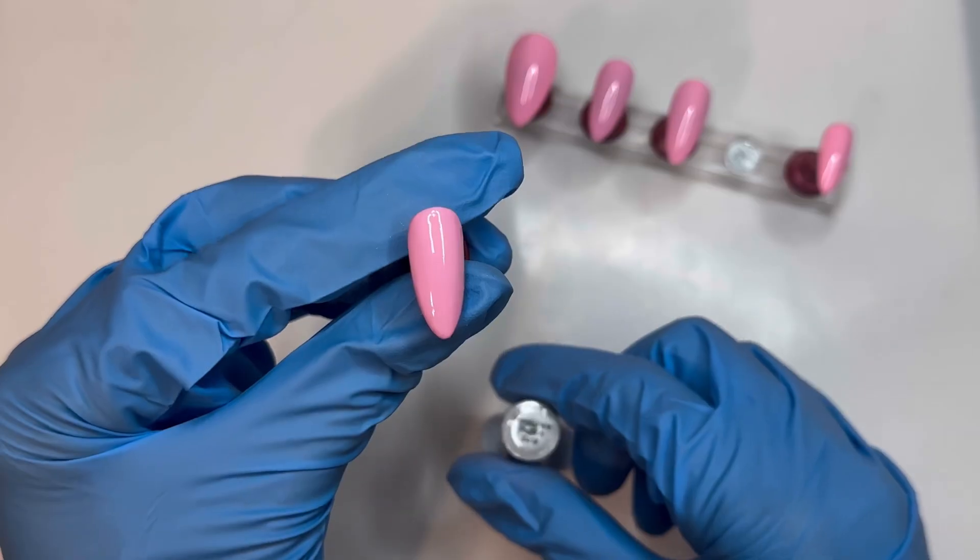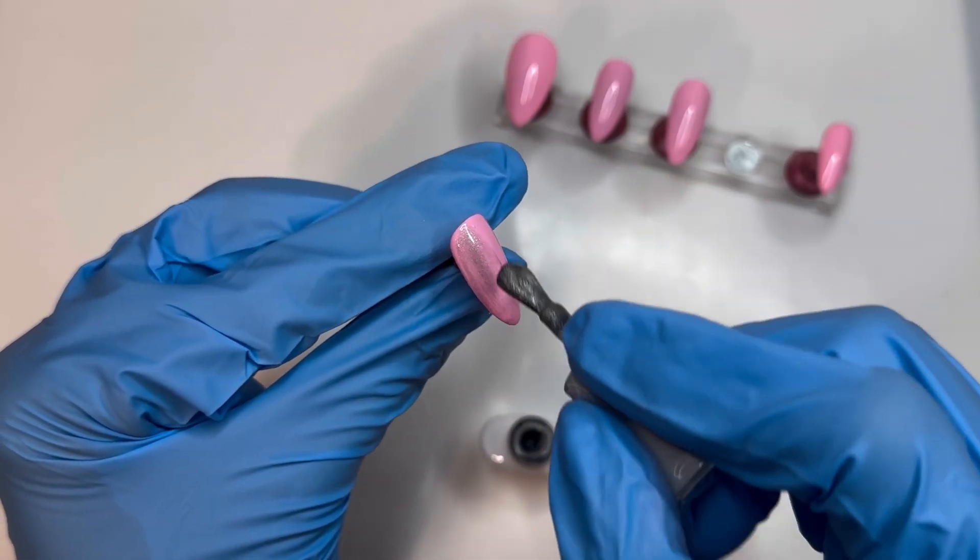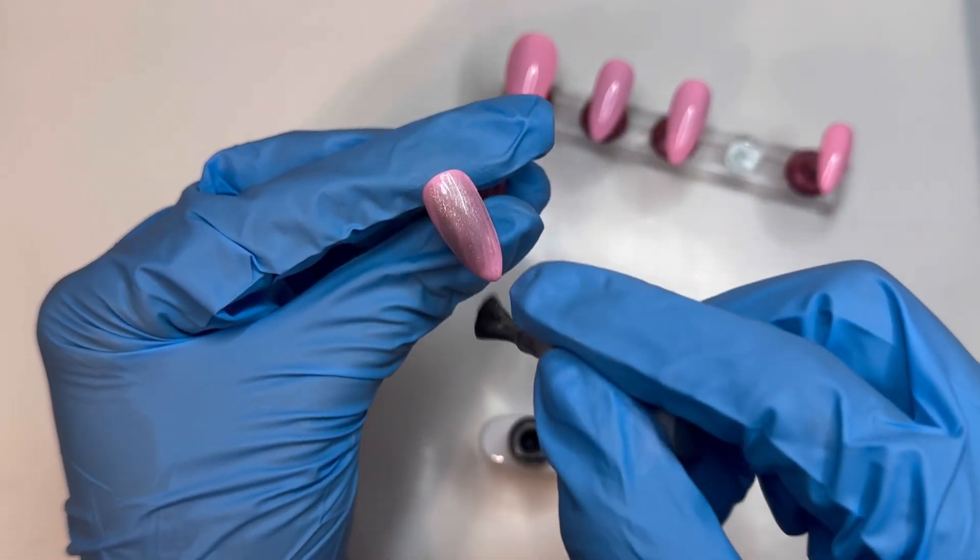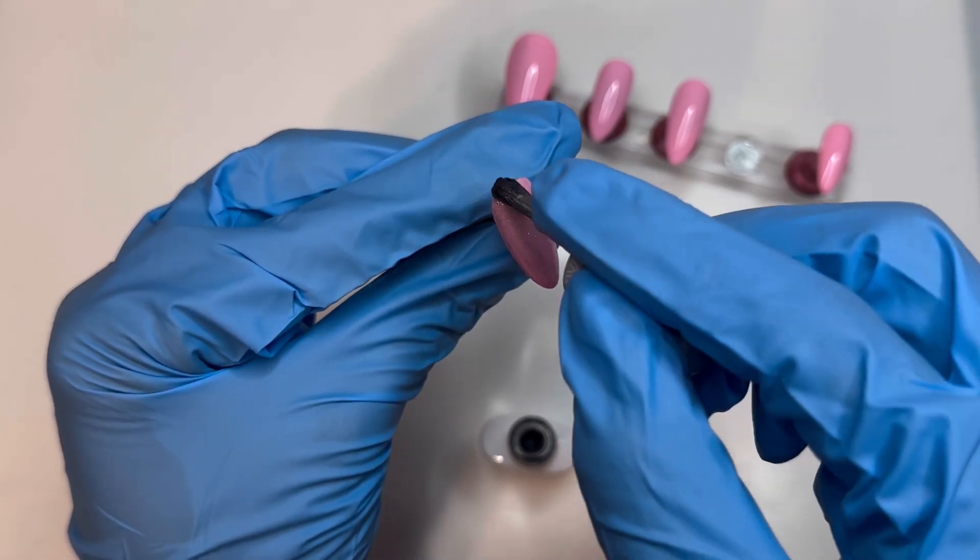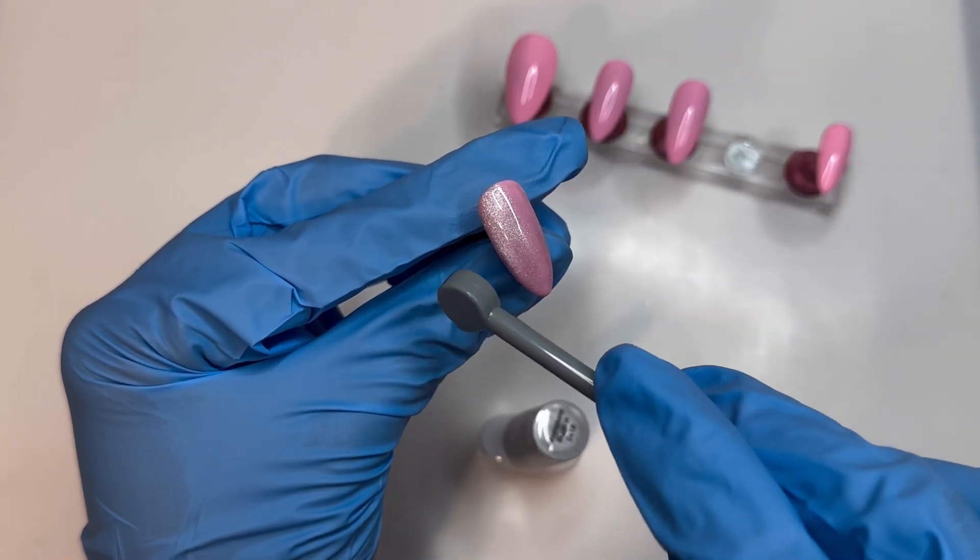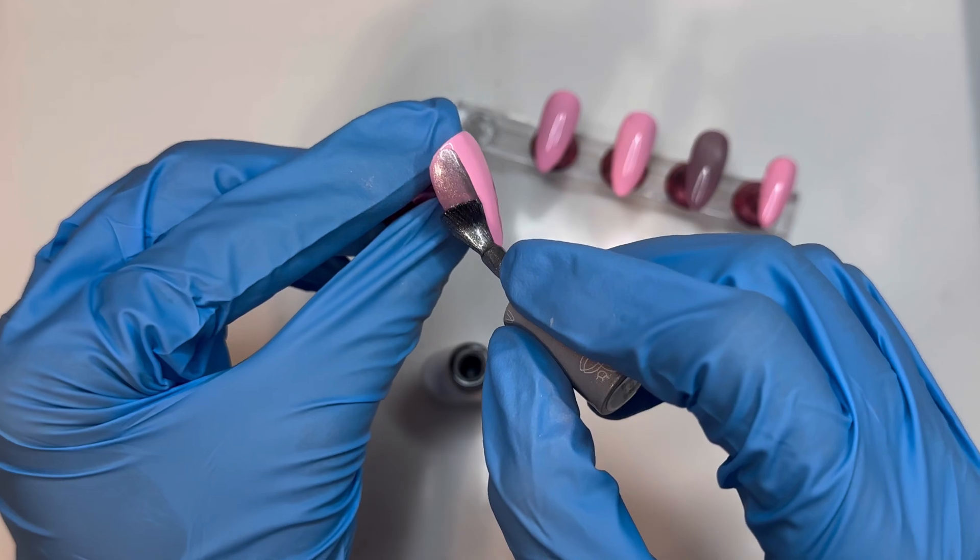I'm using this magnetic gel polish from an Amazon kit. It is the Model One's mini gel salon kit that this actually came out of. I'm using this and then the magnet that came with it. I'm just adding one layer and then I go ahead and use the magnet to create my design. Once I felt like that was good, I did go ahead and cure it. Then I'm doing the same thing on my thumbnail.